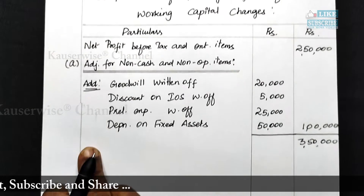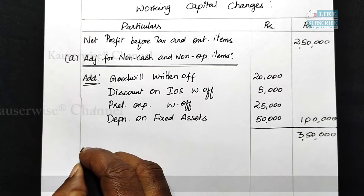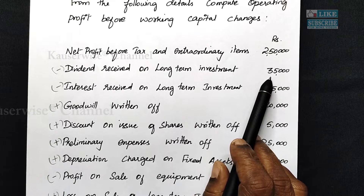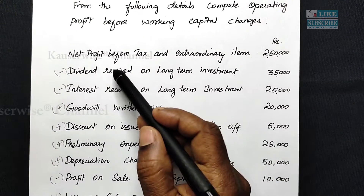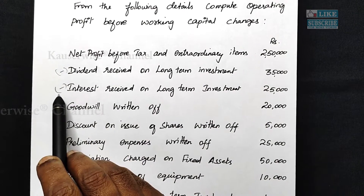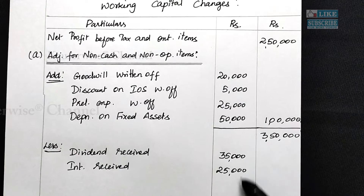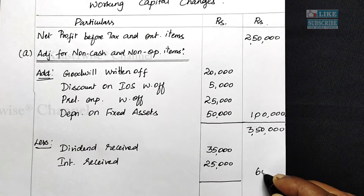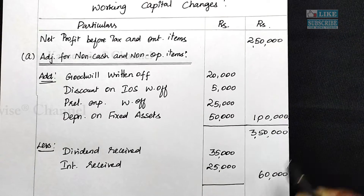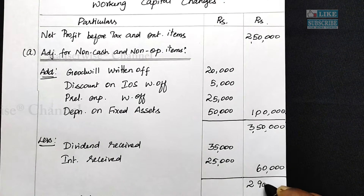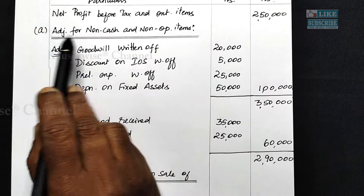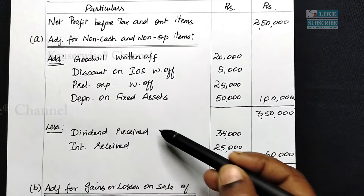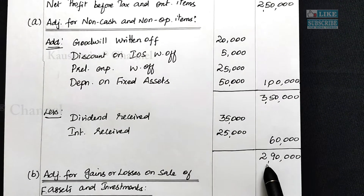Next, we need to subtract any non-operating incomes. From the problem, we have two non-operating incomes: dividend received 35,000 and interest received 25,000. These two items need to be subtracted. Non-operating income to be subtracted: 35,000 plus 25,000 equals 60,000. Subtracting 60,000 from 3,50,000 gives 2,90,000. The first adjustment is now complete — non-operating expenses added and non-operating incomes subtracted, with a net result of 2,90,000.